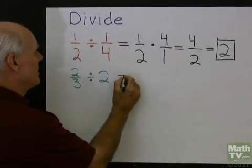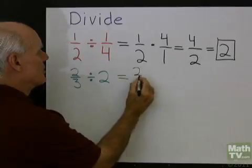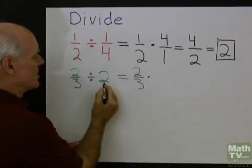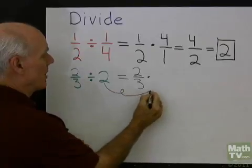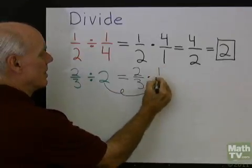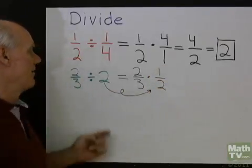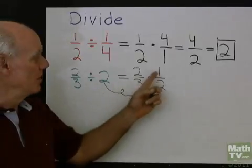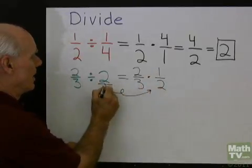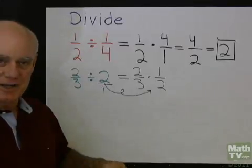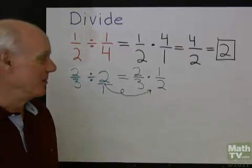So this is going to be equal to 2 thirds times, instead of 2, I'm going to multiply by its reciprocal, which is 1 half. So the reciprocal of 2 is 1 half, and I can think of 2, if I want, as 2 divided by 1, then I can see that the reciprocal just comes out to be 1 half.